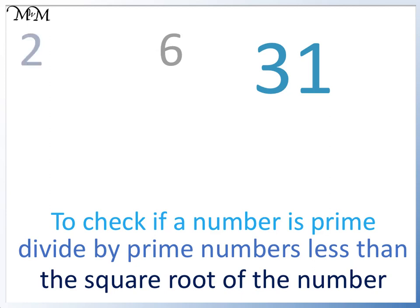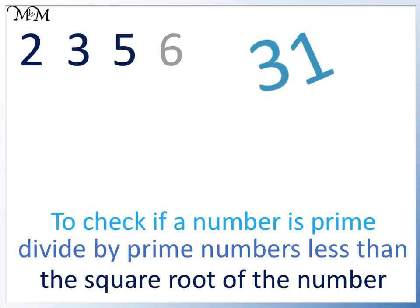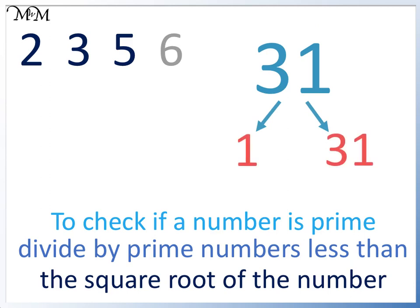We have 2, which does not go into 31. 3, which doesn't go into 31. And 5, which doesn't go into 31. 31 is not in these times tables. It can only be written as 1 times itself. It is prime.